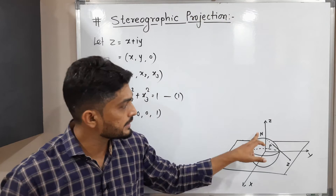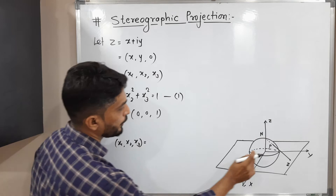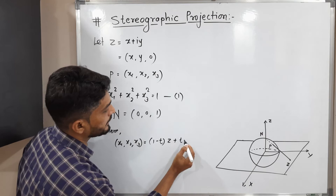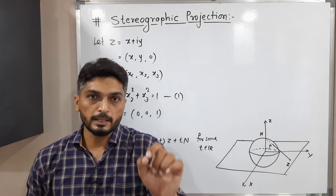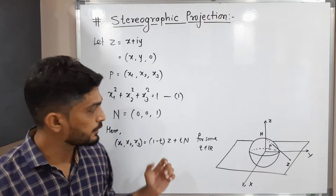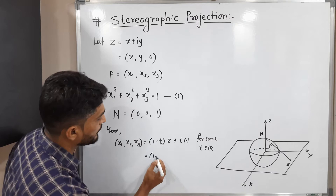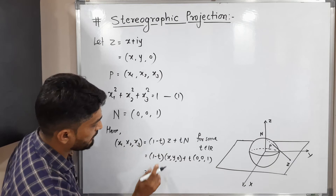Since point P lies on the line joining N and z, we can write the coordinates (x₁, x₂, x₃) of point P as (1−t)z + t·N for some t belonging to R. This uses the standard equation of a line: (1−t) times the starting point plus t times the ending point. Let us substitute the coordinates: this equals (1−t)(x, y, 0) plus t(0, 0, 1), since our N is (0, 0, 1).